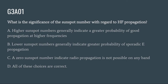G3A01: What is the significance of the sunspot number with regard to HF propagation? A. Higher sunspot numbers generally indicate a greater probability of good propagation at higher frequencies. B. Lower sunspot numbers indicate greater probability of sporadic E propagation. C. A zero sunspot number indicates radio propagation is not possible on any band. Or D. All of these choices are correct. The correct answer is A: higher sunspot numbers generally indicate a greater probability of good propagation at higher frequencies.